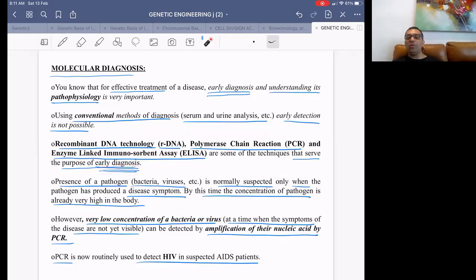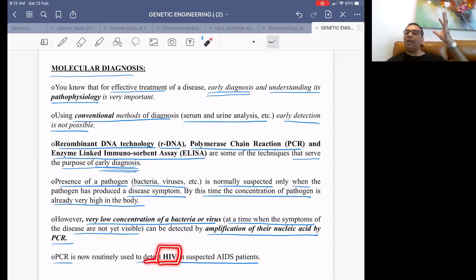For example, suppose you have HIV infection. HIV virus comes into your body and its signs and symptoms happen after 5 to 10 years. Then you do blood test, you will find HIV virus but you will detect it after 5 to 10 years when the symptoms of AIDS come and that is too late.